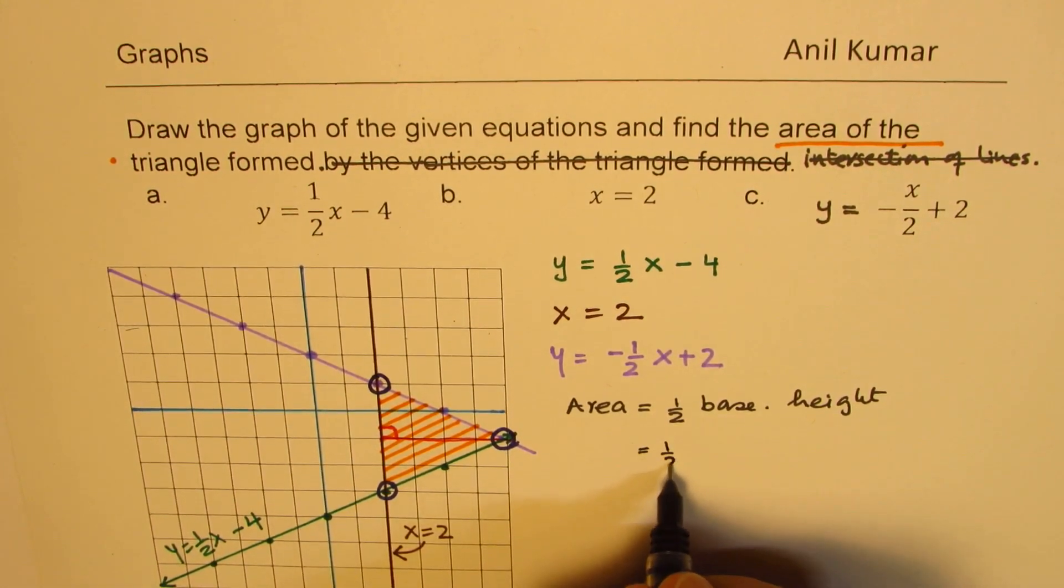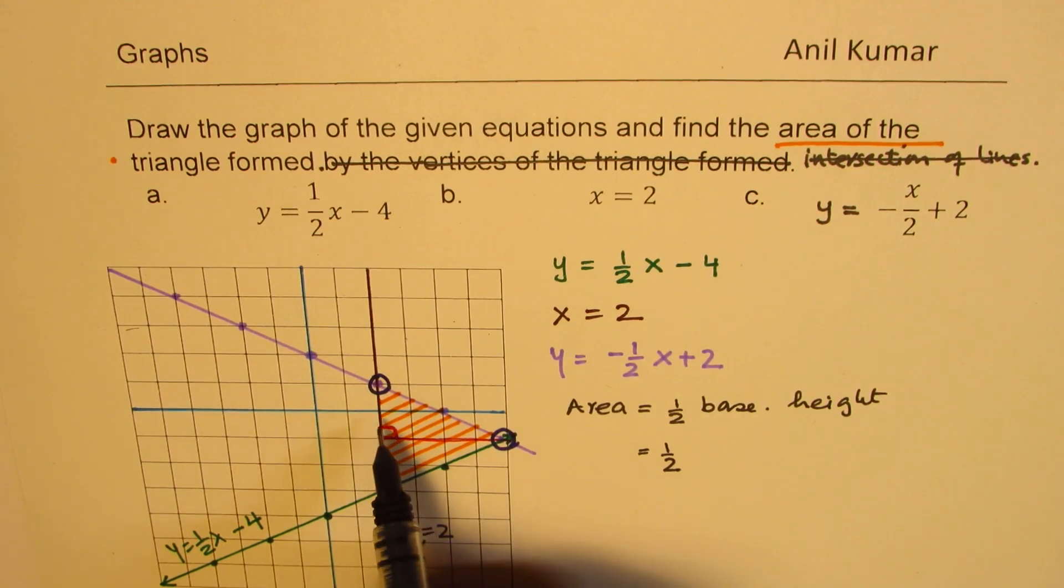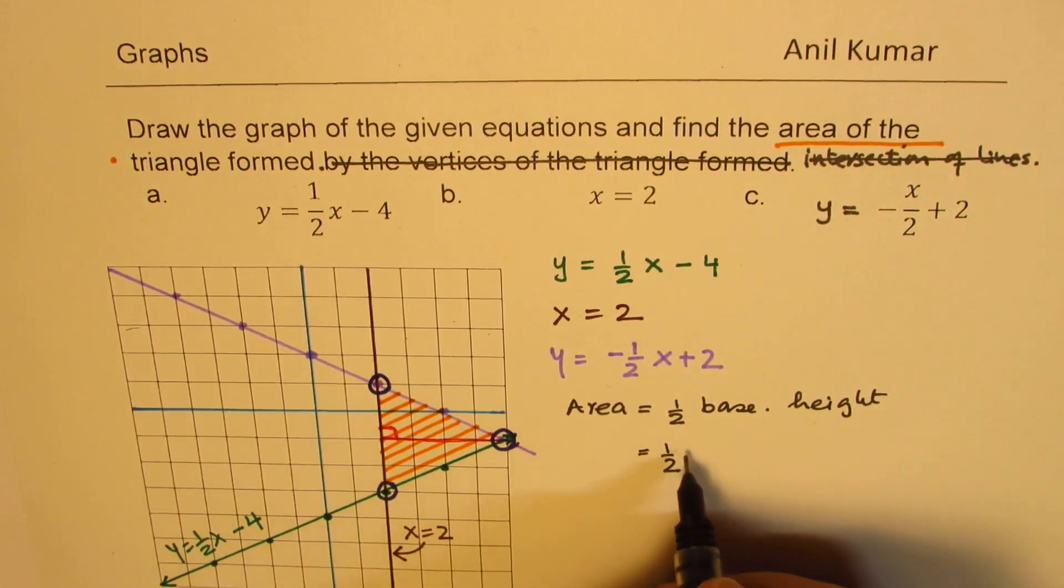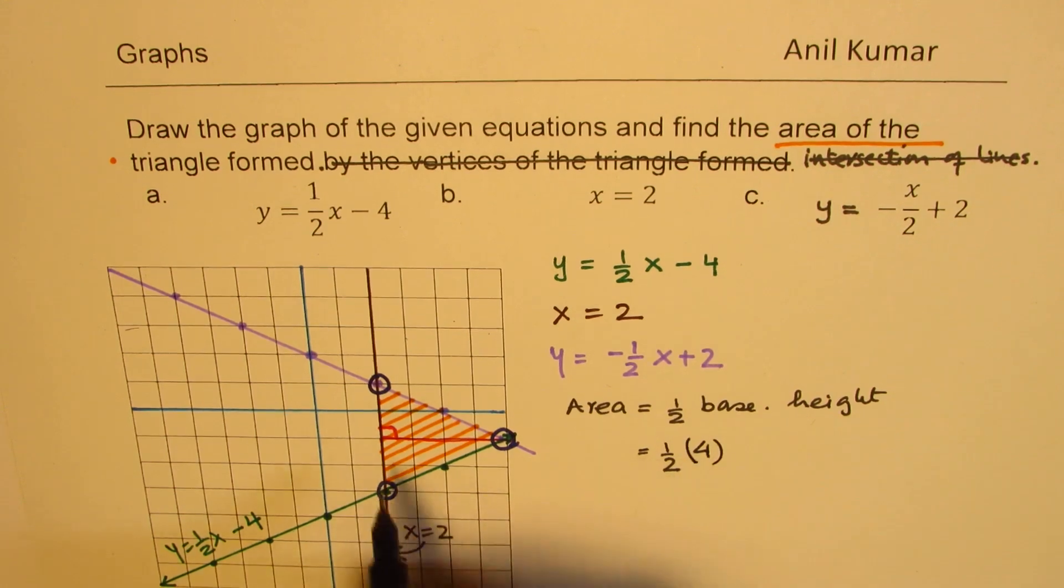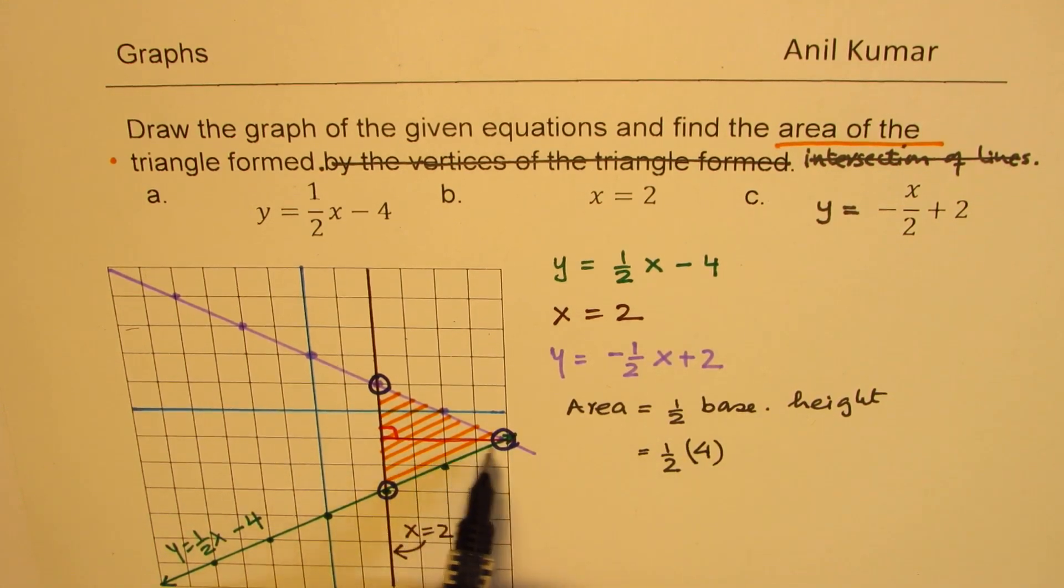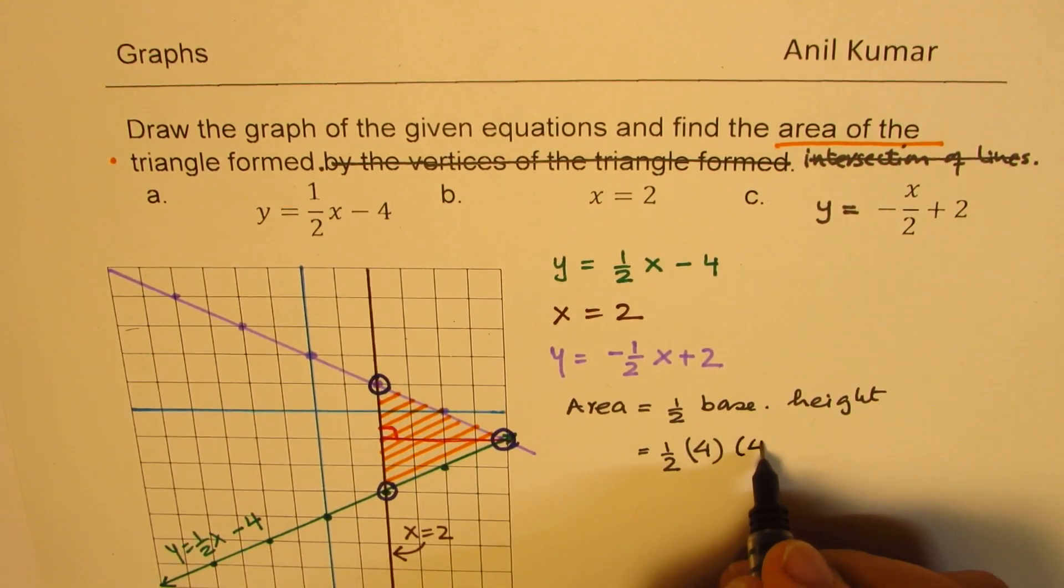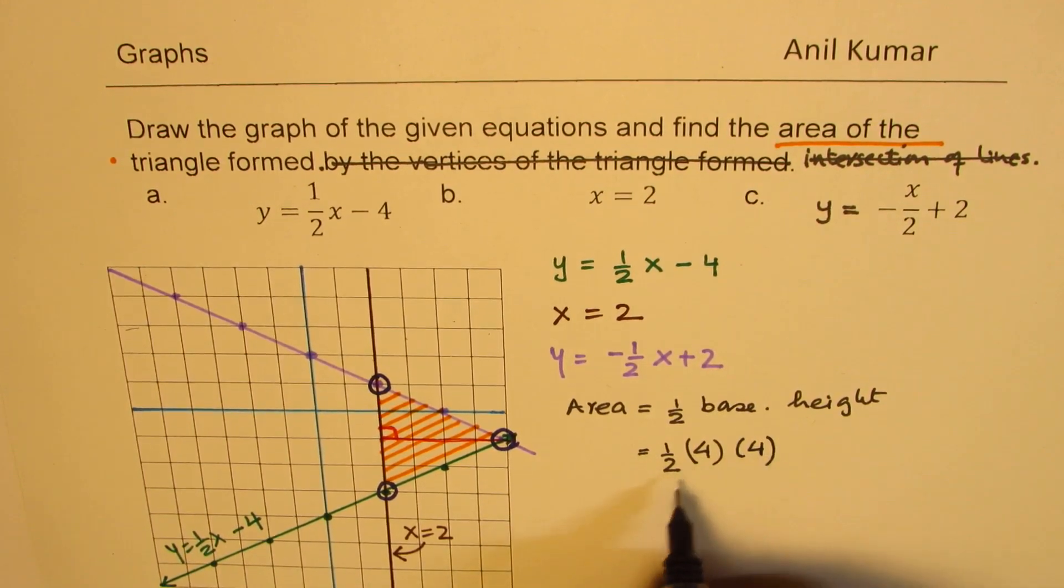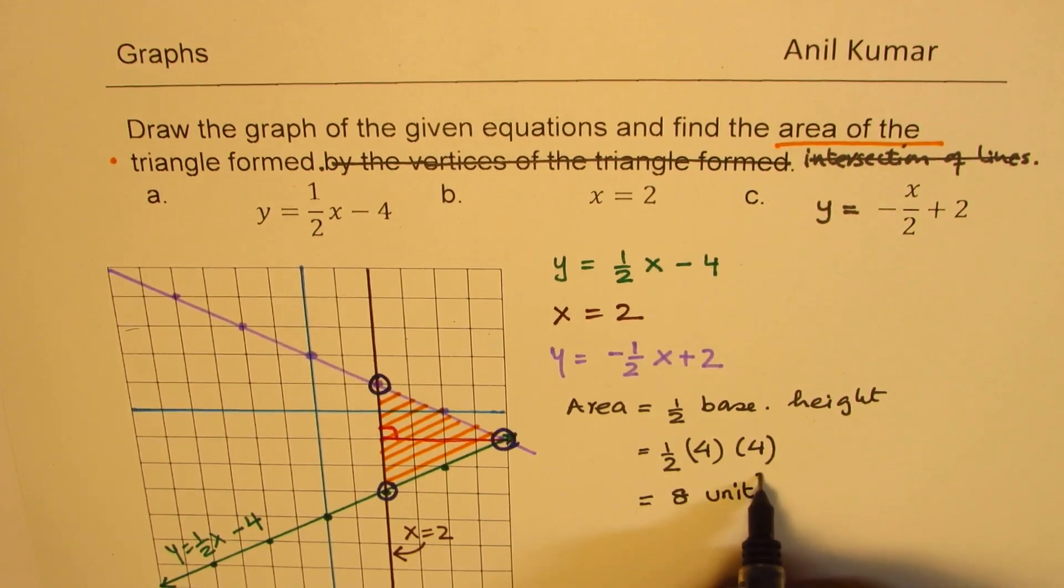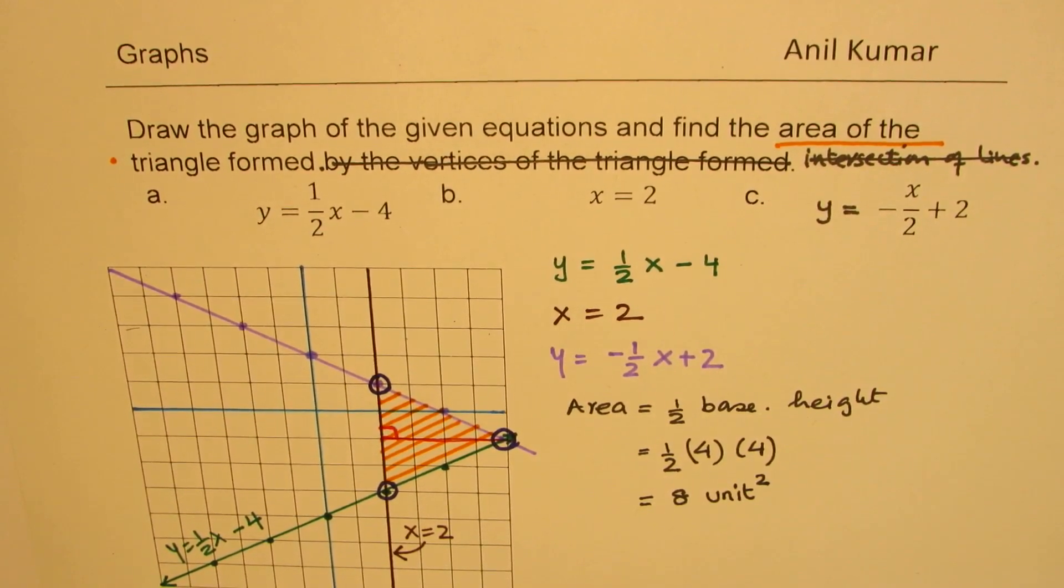So in this case, it is half of, we are considering that to be the base. Each centimeter is one unit, 1, 2, 3, 4. So base is 4. And the height is 1, 2, 3, 4, also 4. Now, 16 divided by 2 is 8, so we get 8 unit square as the area of the given triangle. Perfect. So that is how you could actually find it.